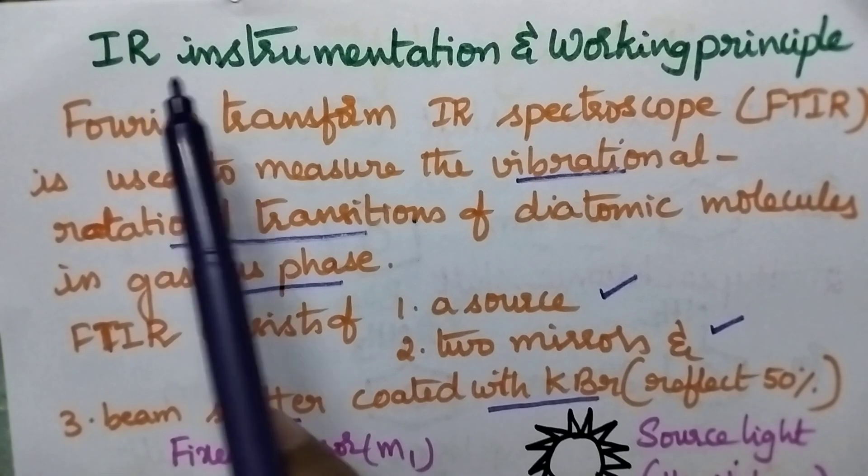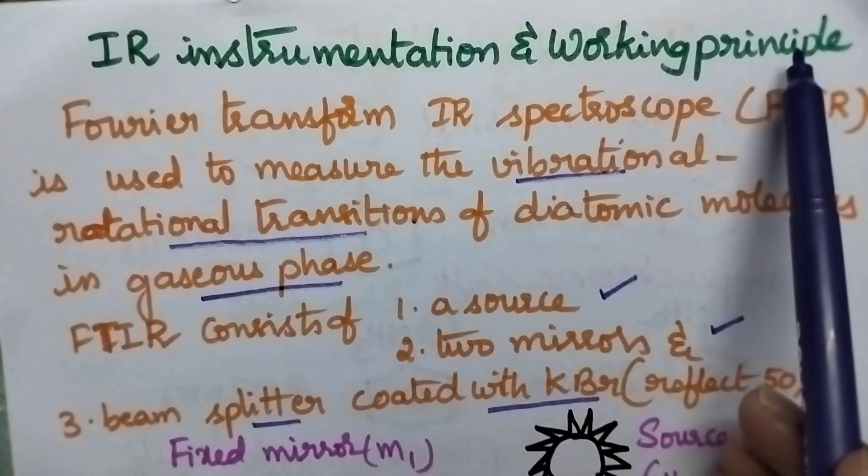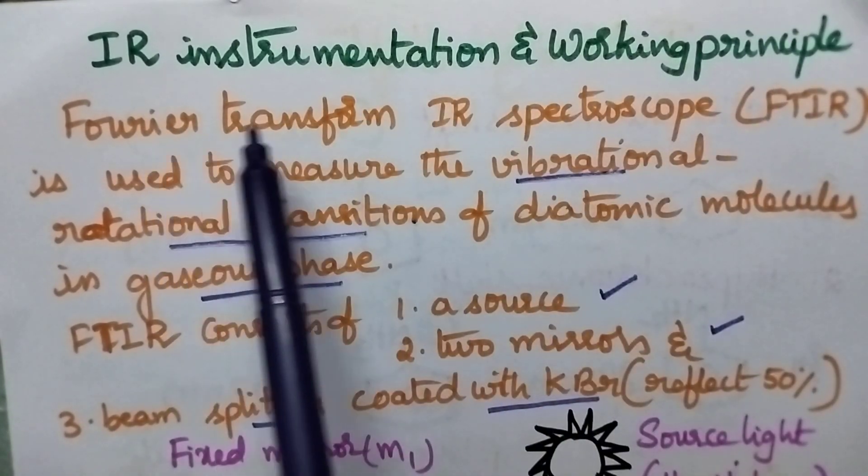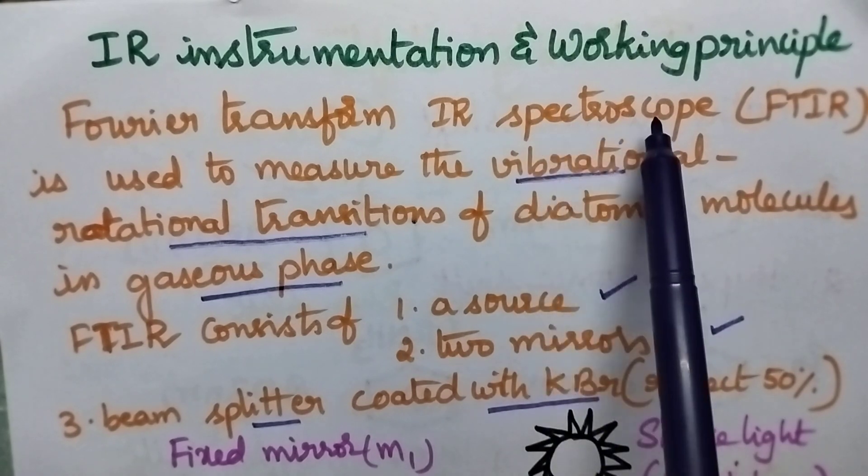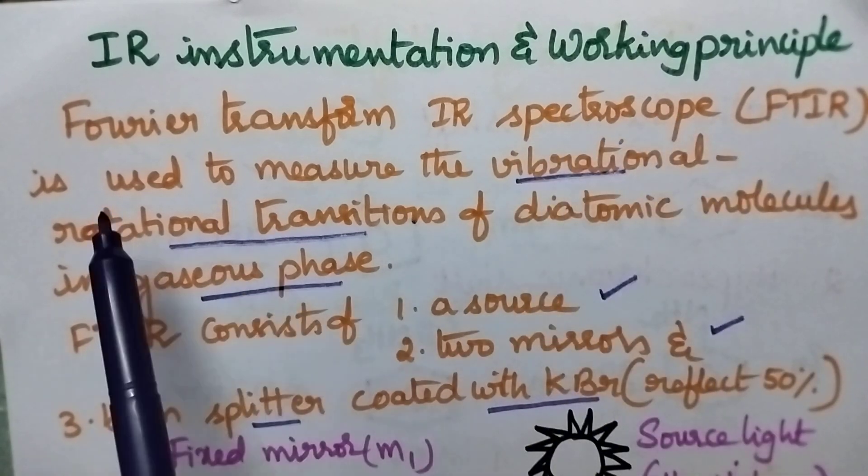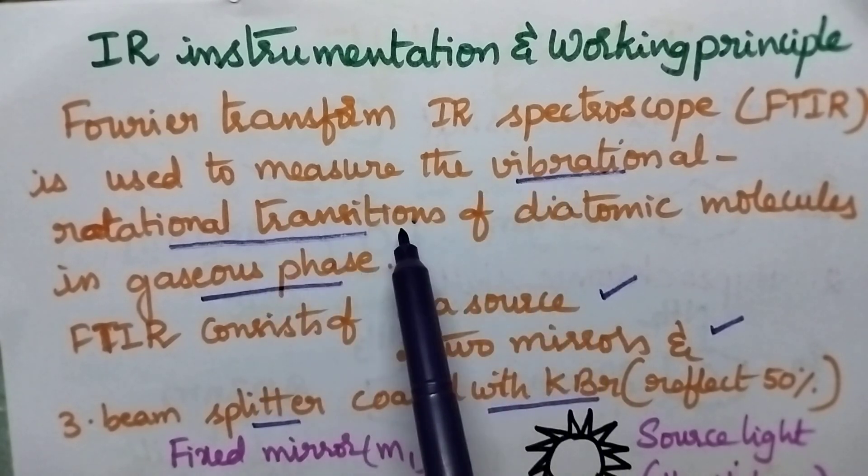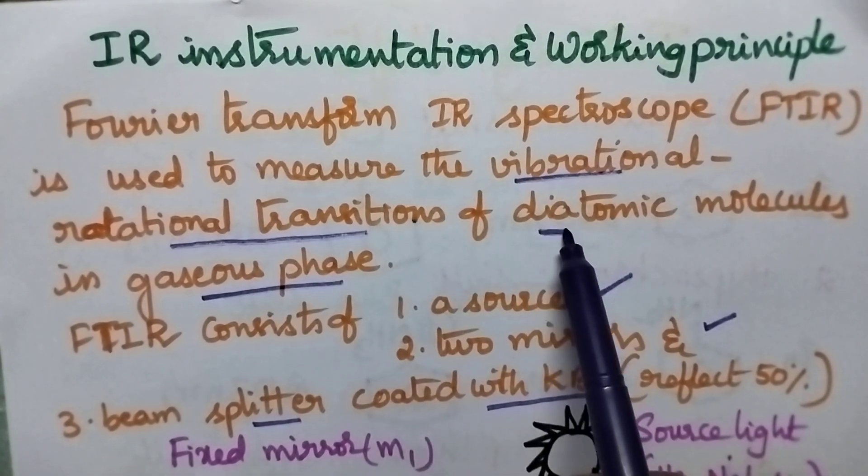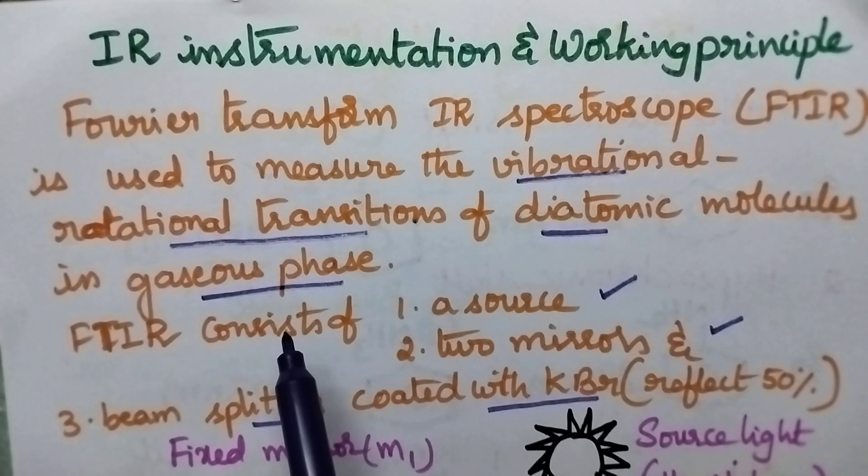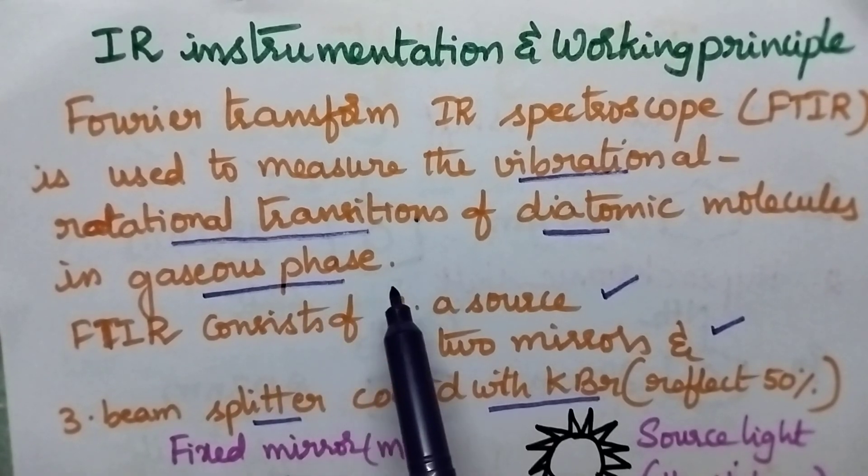I am going to discuss in brief about the IR instrumentation and the working principle. Generally, Fourier transform IR spectroscope, that is FTIR, is used to measure the vibrational and rotational transitions of diatomic molecules, especially in the gaseous phase.